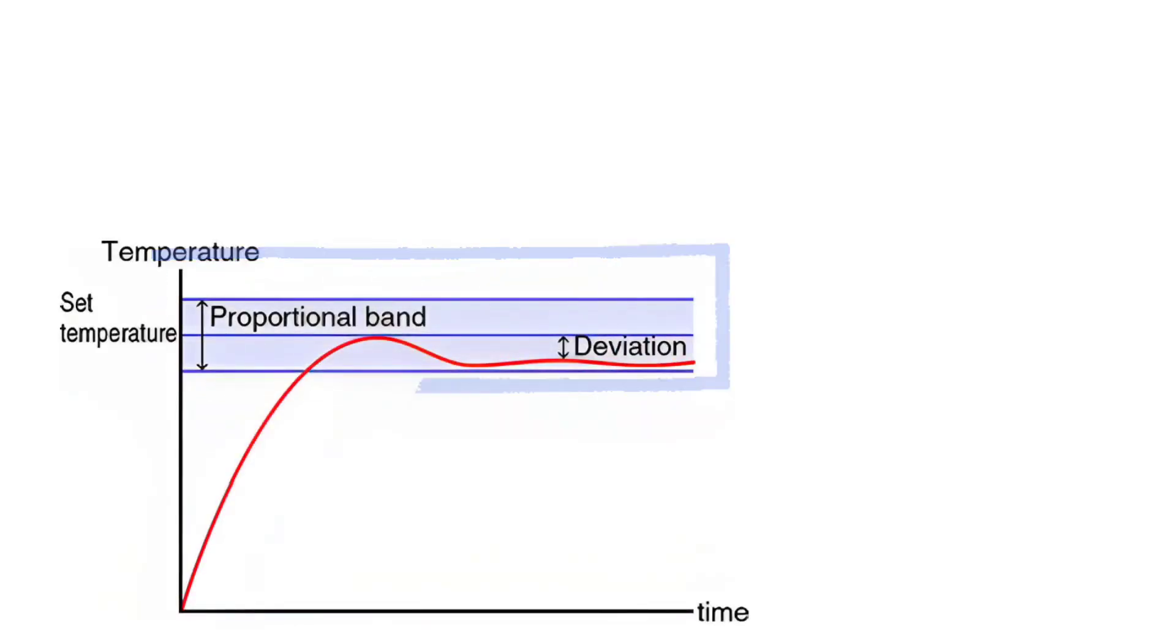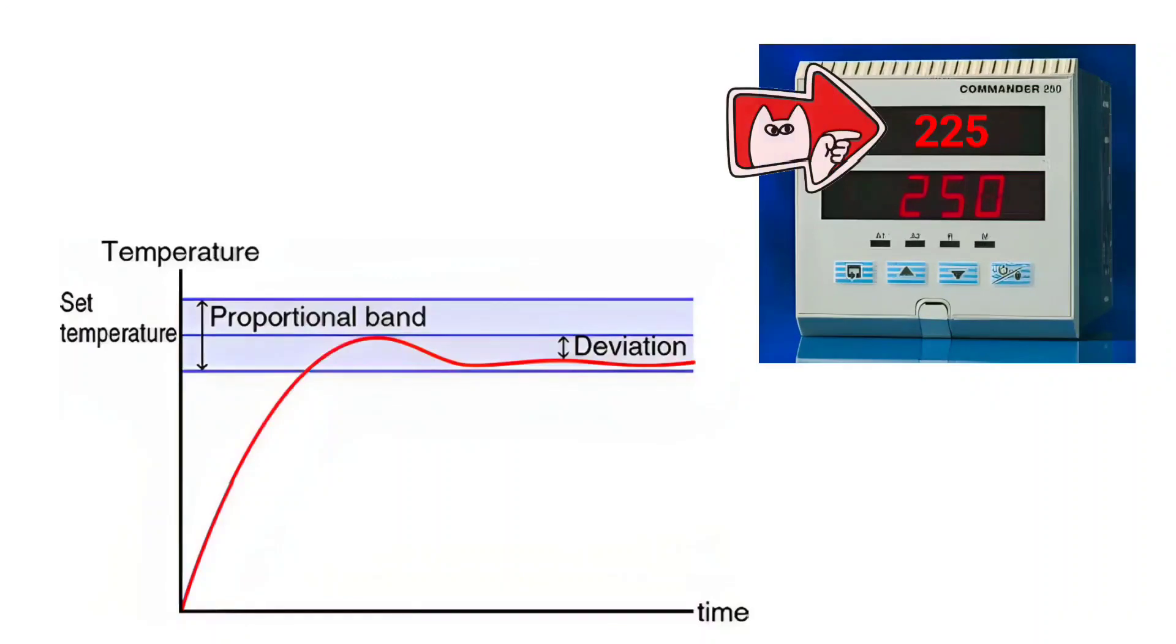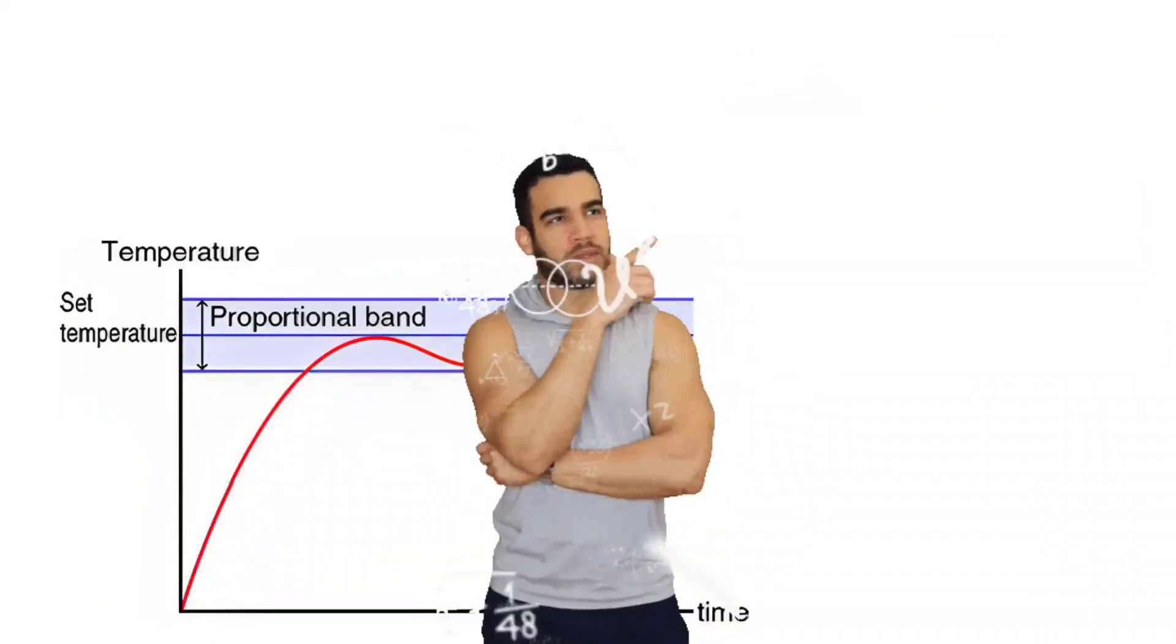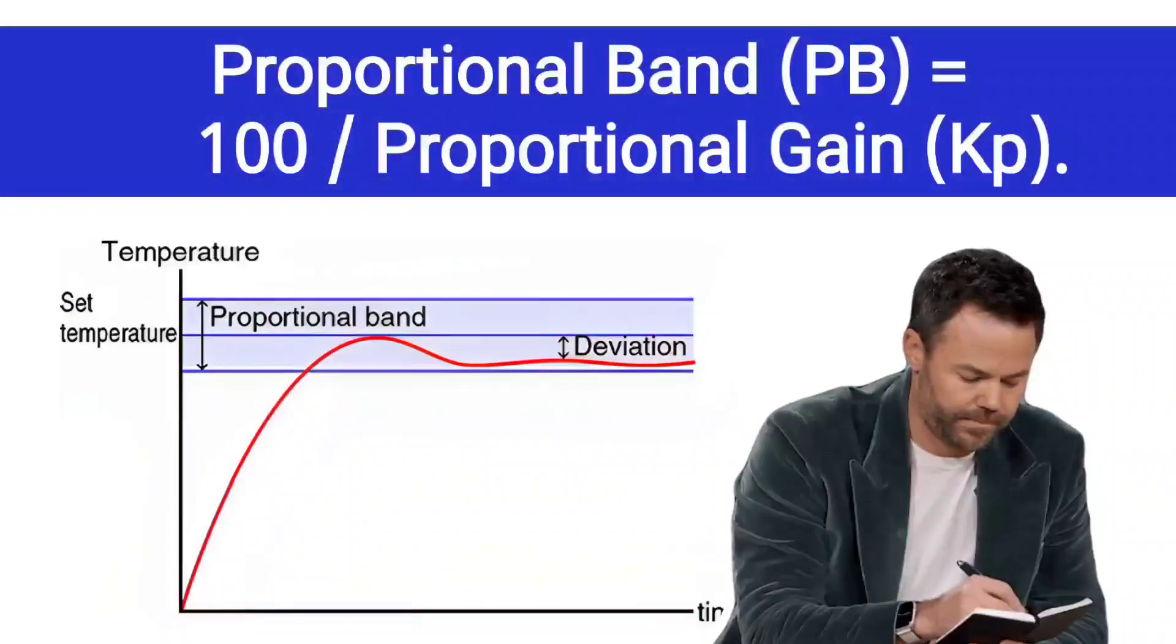Using proportional band PB to calculate the range of adjustment of process variable, there is a formula and that is proportional band PB is equals to 100 divided by proportional gain Kp.